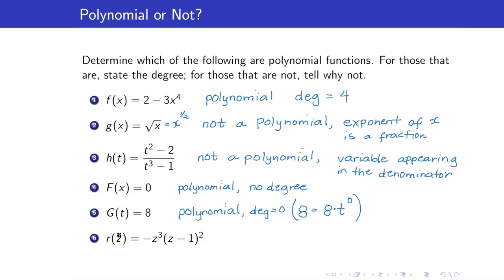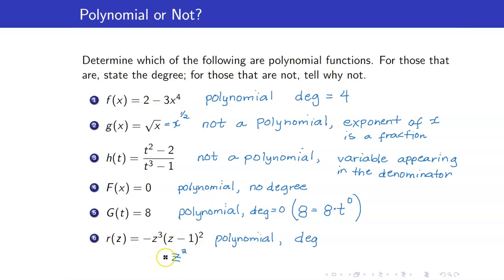Lastly, you have r of z equals negative z cubed times (z minus 1) squared. This is a polynomial. When you expand (z minus 1) squared, you get a term of z squared, which will be multiplied by z cubed, giving z to the fifth power. So therefore, the degree is equal to 5.